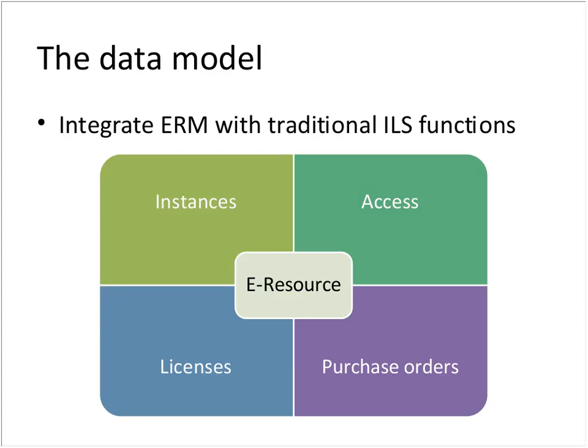The other key feature of the data model is that it integrates ERM functionality with traditional ILS functions. The e-resource record is kind of at the center of it all — it pulls together the instances that make up that e-resource, the license that governs it, the purchase orders linked to individual instances or directly to the e-resource for a one-line payment. While there's no OPAC, link resolver, or MARC record service built into KualiOLE, we still want to make sure people can use the system to manage the workflow of setting up all those access points. This really is a one-stop-shopping approach that eliminates separation between data in different systems — it's all together.